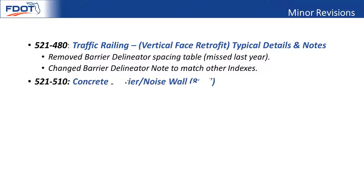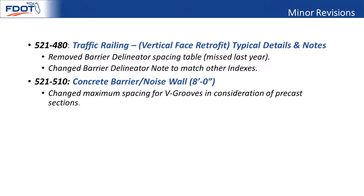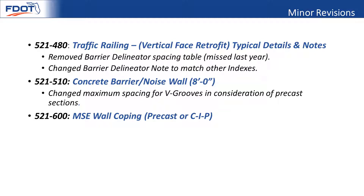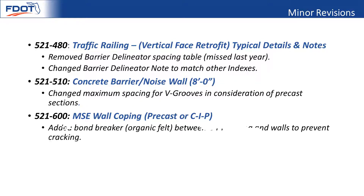For our eight-foot noise wall on barriers, the deep groove spacing was slightly shorter than the minimum length for a precast section, so we made a small adjustment to the minimums and maximum spacing just to make it consistent. Index 521 600 MSE wall coping — we added a bond breaker between the cast-in-place coping and the wall to prevent cracking due to differential shrinkage.